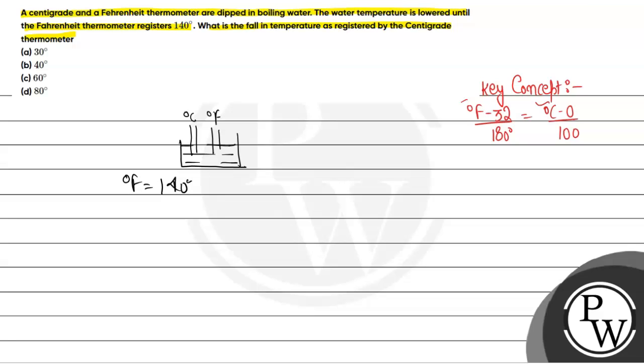We will convert it by the given expression: degree Fahrenheit minus 32 divided by 180 will be equal to degree Celsius minus 0 divided by 100. Now the degree Fahrenheit scaling given is 140 degree minus 32 divided by 180 degree, and it will be degree Celsius value divided by 100.